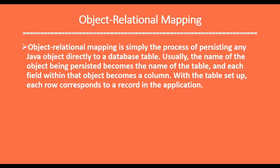First we'll see what is ORM — Object Relational Mapping. Object Relational Mapping is simply the process of persisting any Java object directly into a database table. Usually the name of the object being persisted becomes the name of the table, and each field within that object becomes a column.